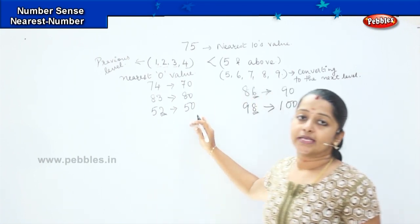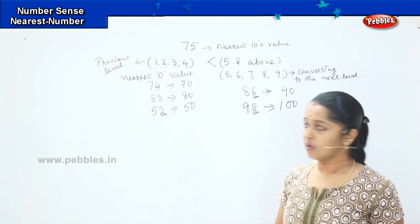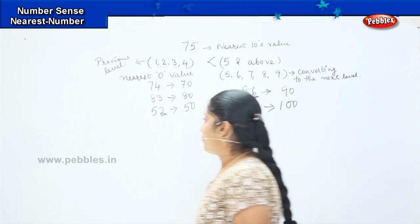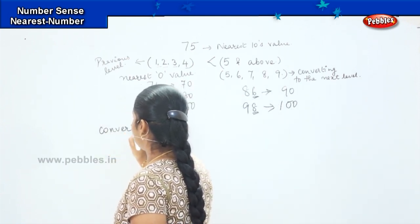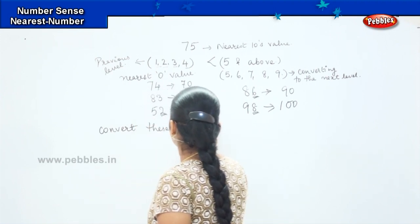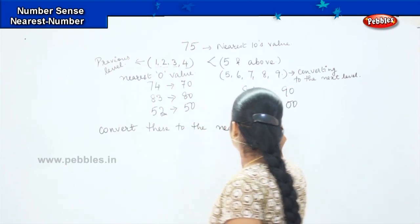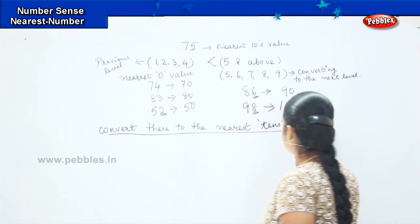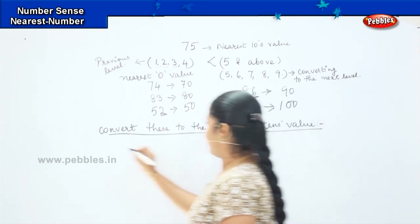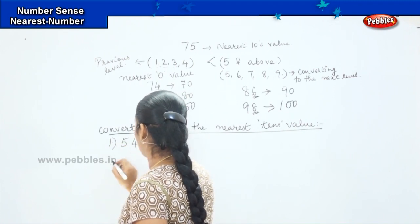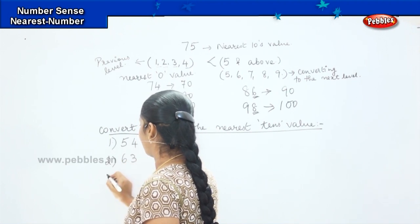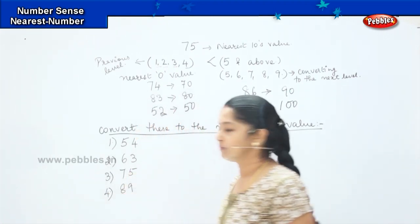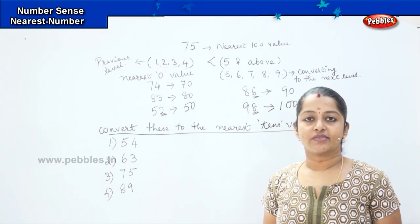The same rule applies to hundreds and thousands as well. This is the basic rule for converting to the nearest tens or nearest hundreds. Now here is a question: convert the following numbers to the nearest tens value — 54, 63, 75, and 89.